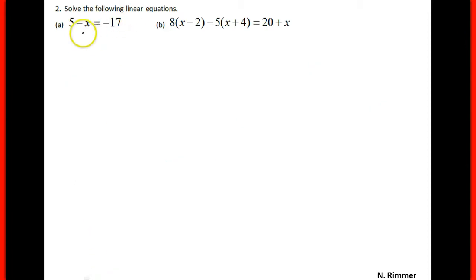I'm going to solve these linear equations. Let's just add x to both sides and have 5 is equal to negative 17 plus x, and add 17 to both sides. And we'll get that 22 is equal to x.